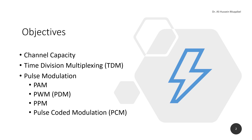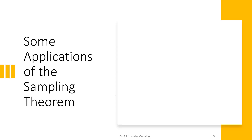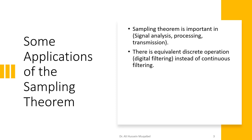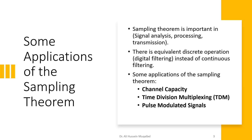As a quick introduction, we would like to highlight the importance of dealing with sampled signals, as the sampling theorem is important to signal analysis, signal processing, and signal transmission. For every analog signal and every analog operation like filtering and amplification, there is an equivalent digital filtering technique. We are dealing here not with digital but with discrete time signals — sampled signals. There are three things not applicable to continuous signals that are now applicable to sampled signals: channel capacity, time division multiplexing, and pulse modulation.